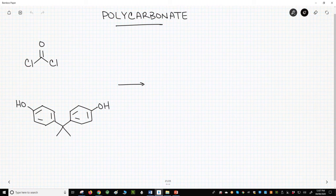On the screen are two monomers that are often used to prepare a class of copolymer called a polycarbonate. One monomer is this interesting acid chloride in the top left. This molecule is called phosgene.